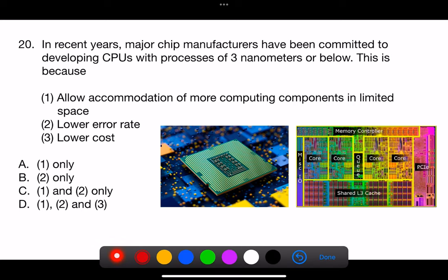Question 20. In recent years, major chip manufacturers have been committed to developing CPUs with processes of 3 nanometers or below. This is because: